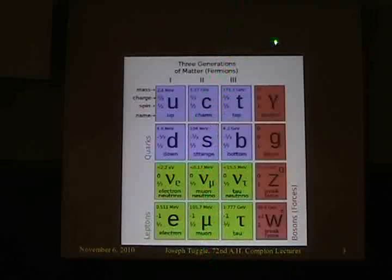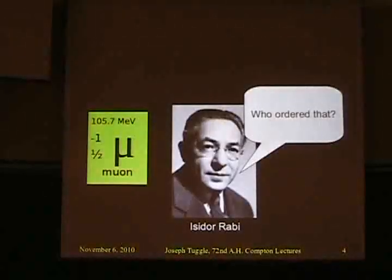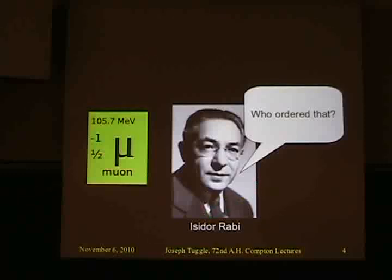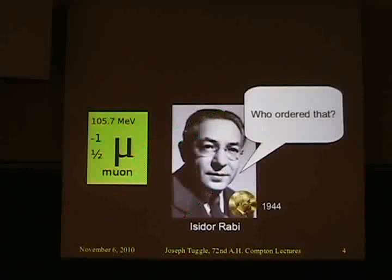It's a bit of a mystery, but that's what we have to work with. And given that, all of the successes of the theory come out. Rabi actually got the Nobel Prize in 1944 — not for the discovery of the muon, but for techniques related to MRI technology. There are so many Nobel Prizes that went into creating this theory of particle physics that I don't have time to mention them all.